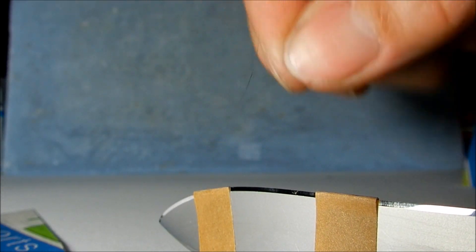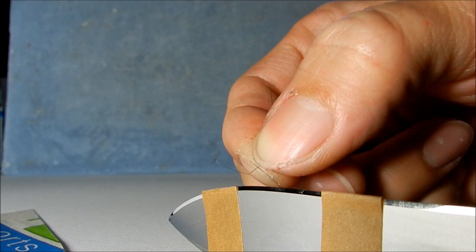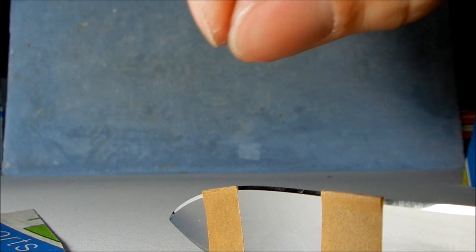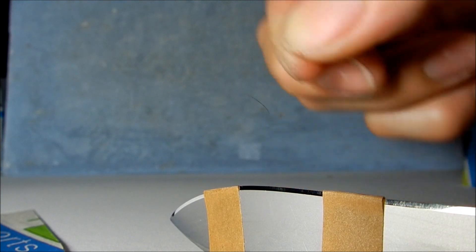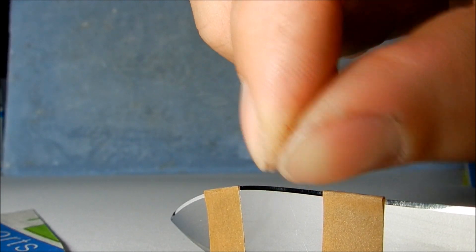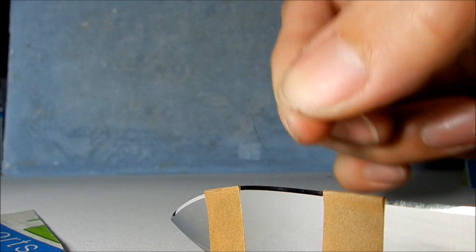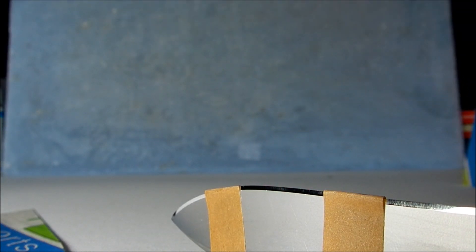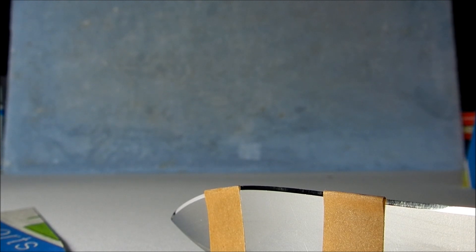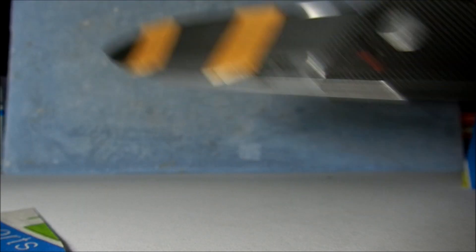Five, ten, fifteen cuts already through phone book paper. I'm going to assume that no matter how much phone book paper I cut, it's not going to get rid of a hair whittling edge. So, let's move on to regular printer paper.